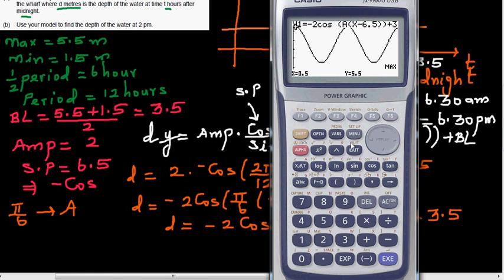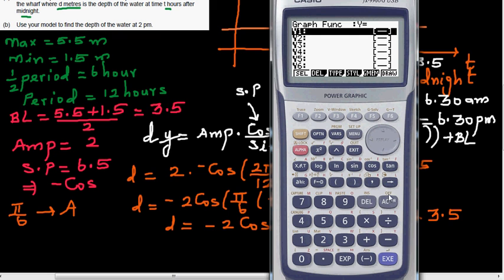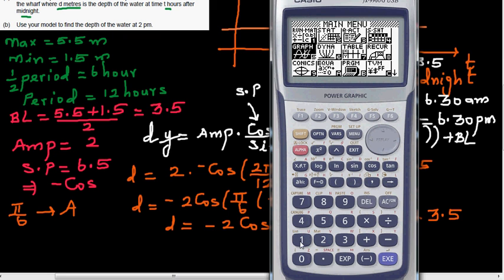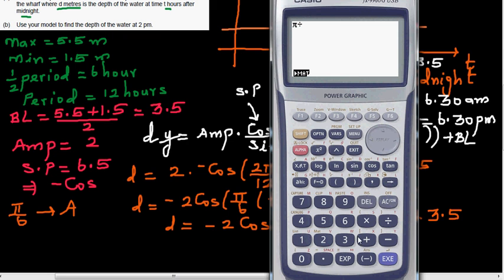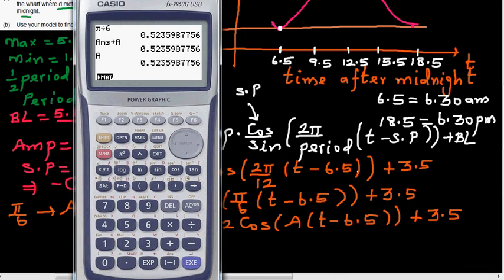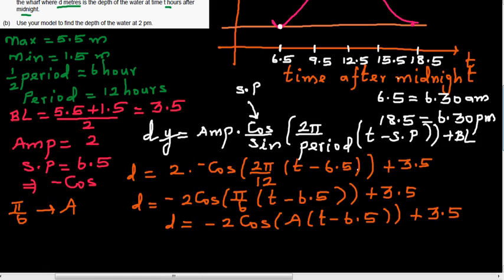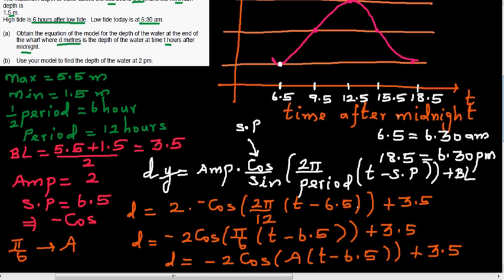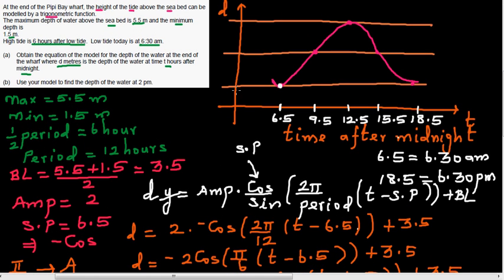Let me get the calculator out. First, save π/6 as A: press shift, π/6, equals, then press the arrow key, alpha A. Now pressing alpha A recalls that value. The graph shows amplitude 2, baseline 3.5, minimum 1.5, and maximum 5.5.